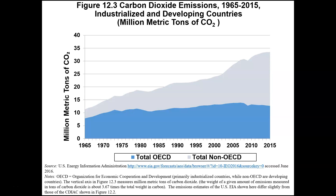This graph shows how those emissions are distributed between developed or OECD countries and developing countries. Back in the 60s, the developed countries — shown in blue — were the vast majority of carbon dioxide emissions, and the non-OECD countries were a really small portion. As time goes by, that changes. We see that OECD countries are making an effort to curb their emissions, so their emissions level off. At the same time, non-OECD countries are developing, and the more industrialized they become, the more they emit.